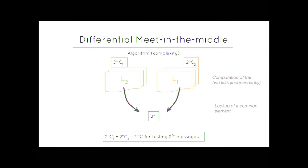So, in terms of complexity, if we call by C1 and by C2 the cost of one call to the function F1 and one call to the function F2, the computation of the L2 list will cost 2^n C1. I recall that the dimension of the space D2 and space D1 are N. So, we have 2^n calls to make, 2^n calls to make. This list has a size 2^n, this list has a size 2^n, so you can look up for a common element in 2^n.